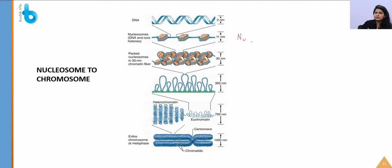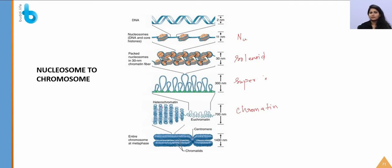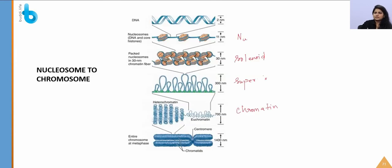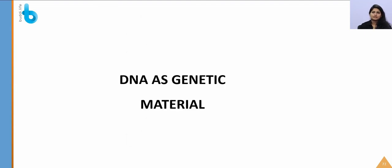There are two types of chromatin: heterochromatin (highly coiled, appears dark, transcriptionally inactive) and euchromatin (loosely packed, appears light, transcriptionally active). In a typical nucleus, loosely packed regions are euchromatin, and densely packed regions are heterochromatin.